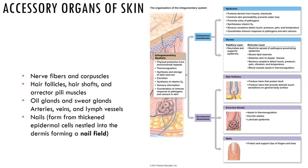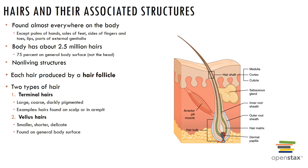Hair functions to alert the body to the presence of insects on the skin, guard our scalp against physical trauma, heat loss, and sunlight. It is distributed over the entire surface of the body except the palms of the hands, soles of the feet, our lips, parts of the external genitalia, and sides of our fingers and toes.